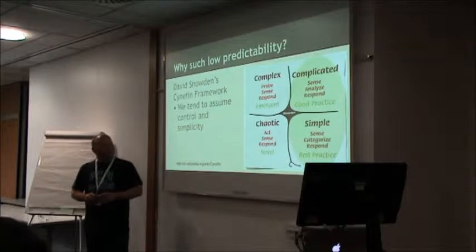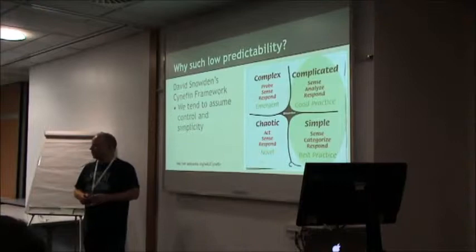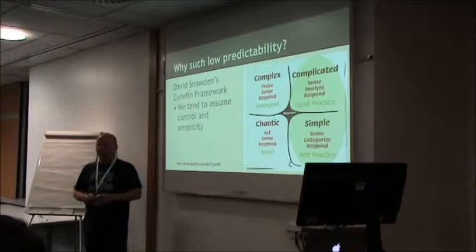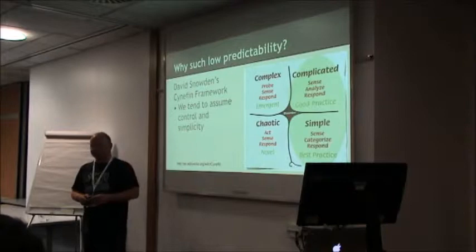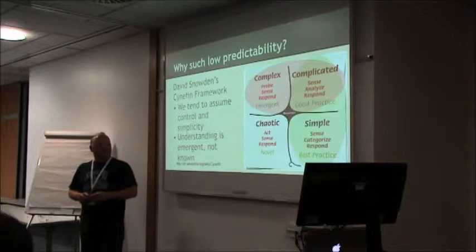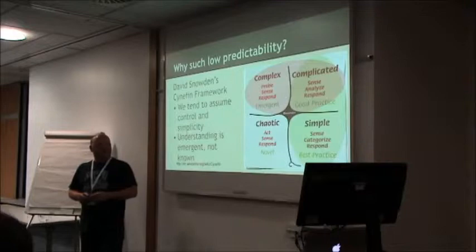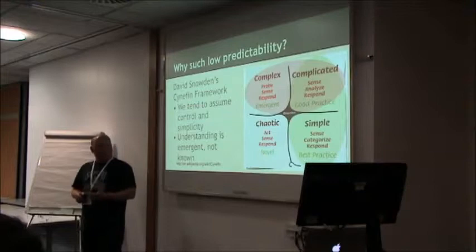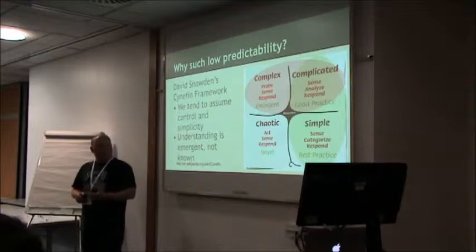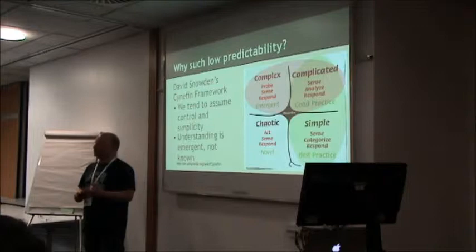In the estimate, we kind of assume that we're doing work in the complicated and simple space. If things are simple, they're easy to estimate. If they're complicated, you should be able to work out what's involved and give a reasonable estimate. In reality, I think possibly we are being a bit optimistic and underestimating the complexity of the problems we're solving. I think that explains why our estimates aren't necessarily any good against our actuals — because we just do not know what's involved at the point where we're making that estimate, in some cases.